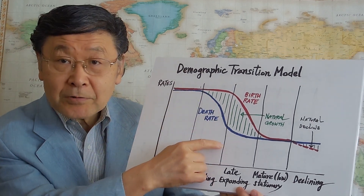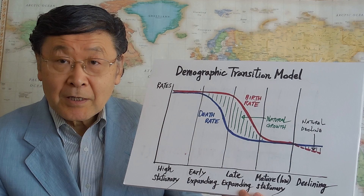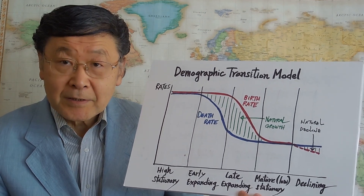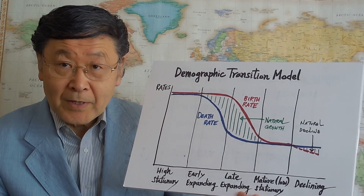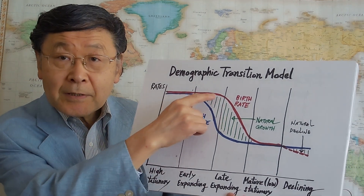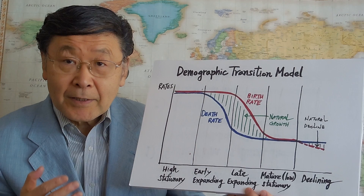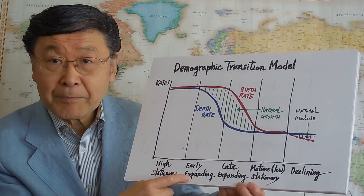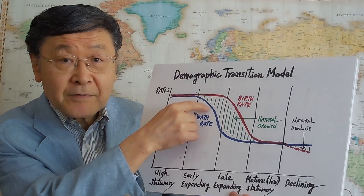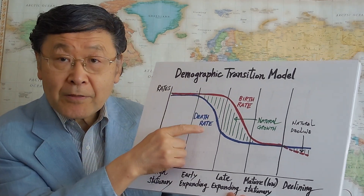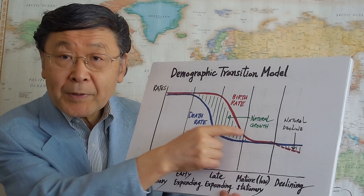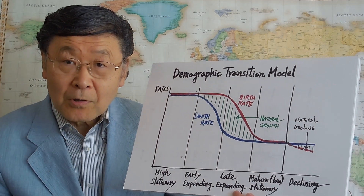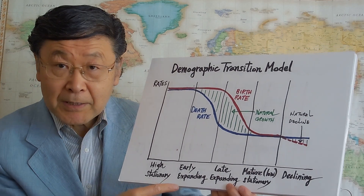After the economy starts the development process, the death rate begins to decline sharply because of improvements in medicine and healthcare, whereas the birth rate tends to stay high in rural areas. This is called the early expanding period, because the difference between birth rate and death rate is the natural population growth rate, so populations start to grow rather rapidly.